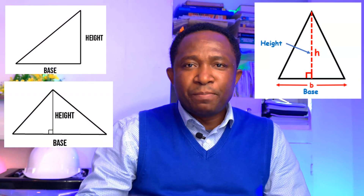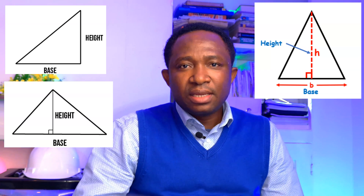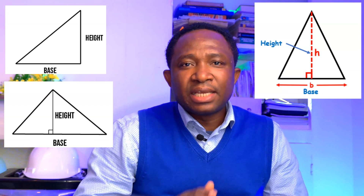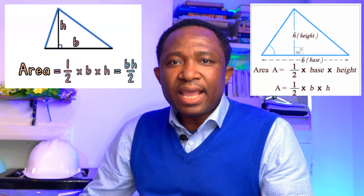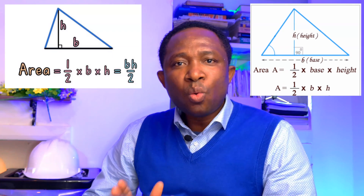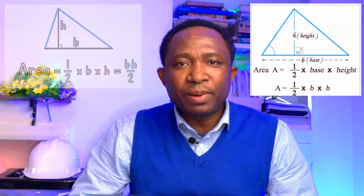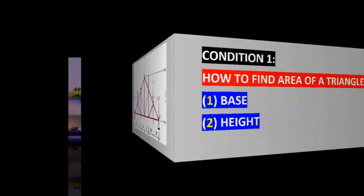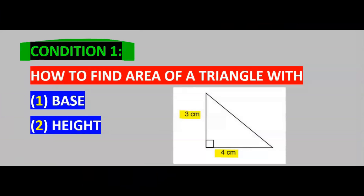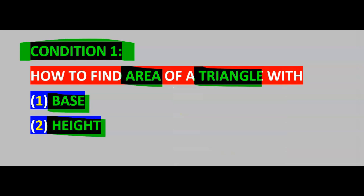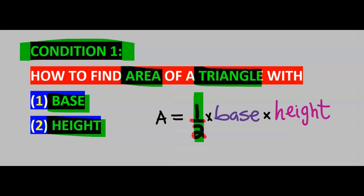The triangle must have a base and a perpendicular height — that is, the base and the height must be at 90 degrees. The angle between the base and the height must be 90 degrees. If the base value is known and the height is also known, then we can apply: area of triangle = 1 over 2 multiplied by the base multiplied by the perpendicular height. We are going to use 1 over 2 times the base of the triangle times the perpendicular height of the triangle.